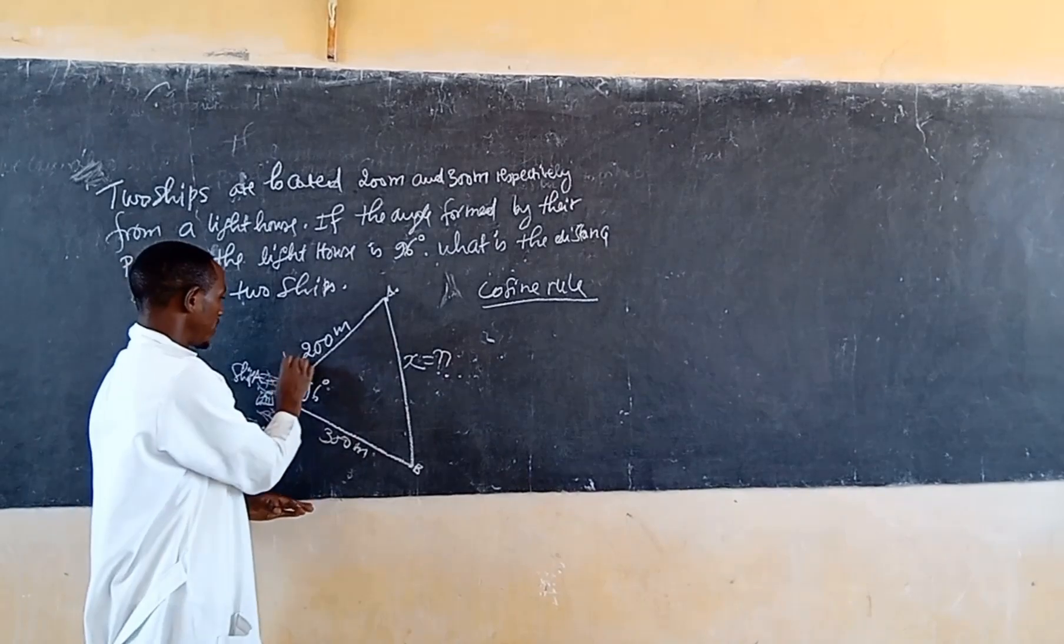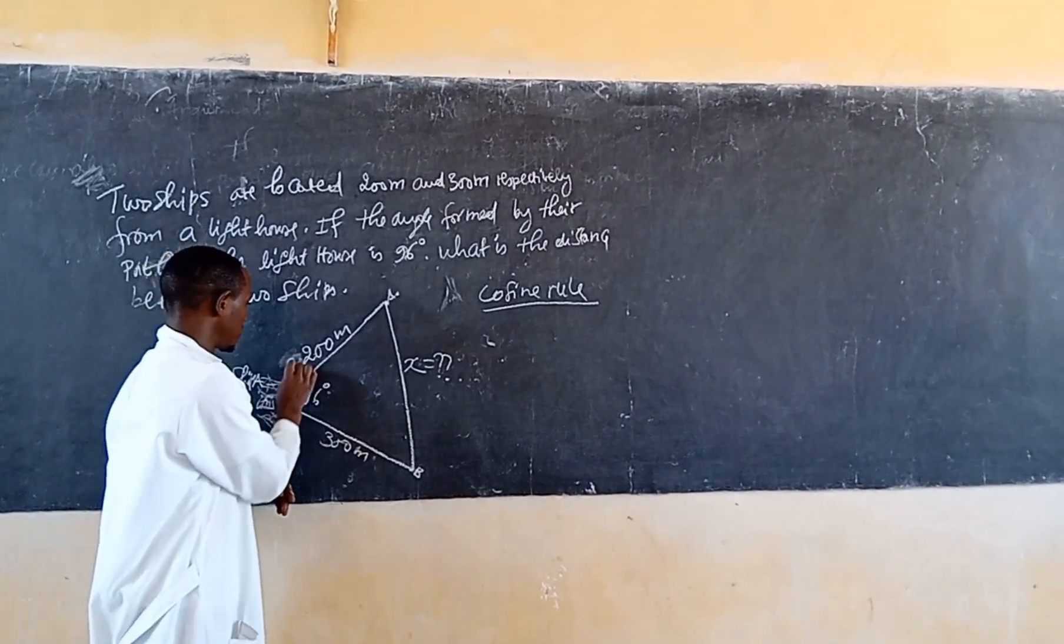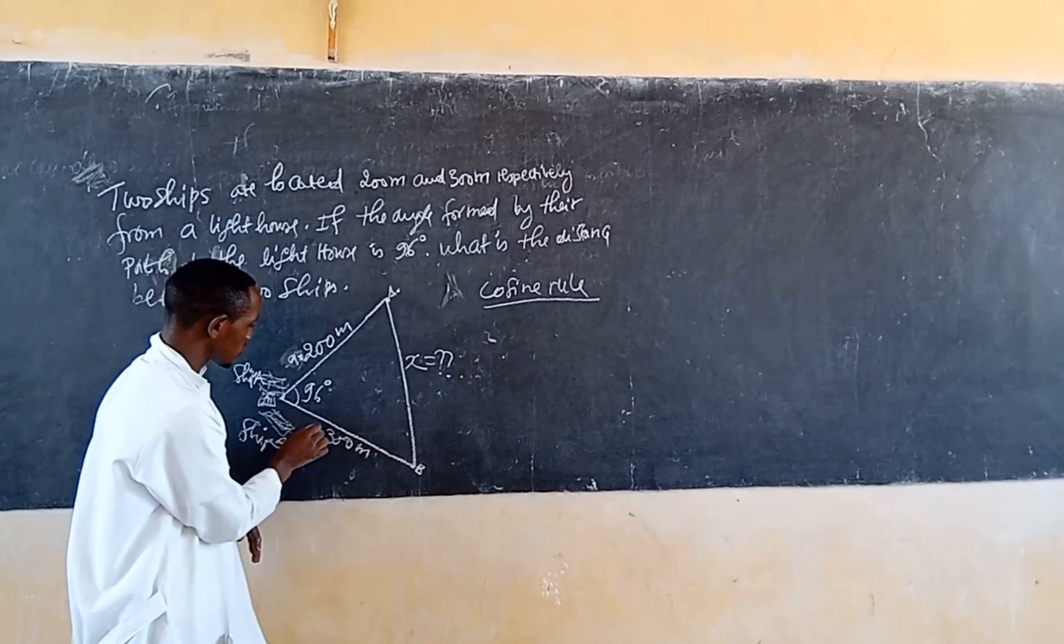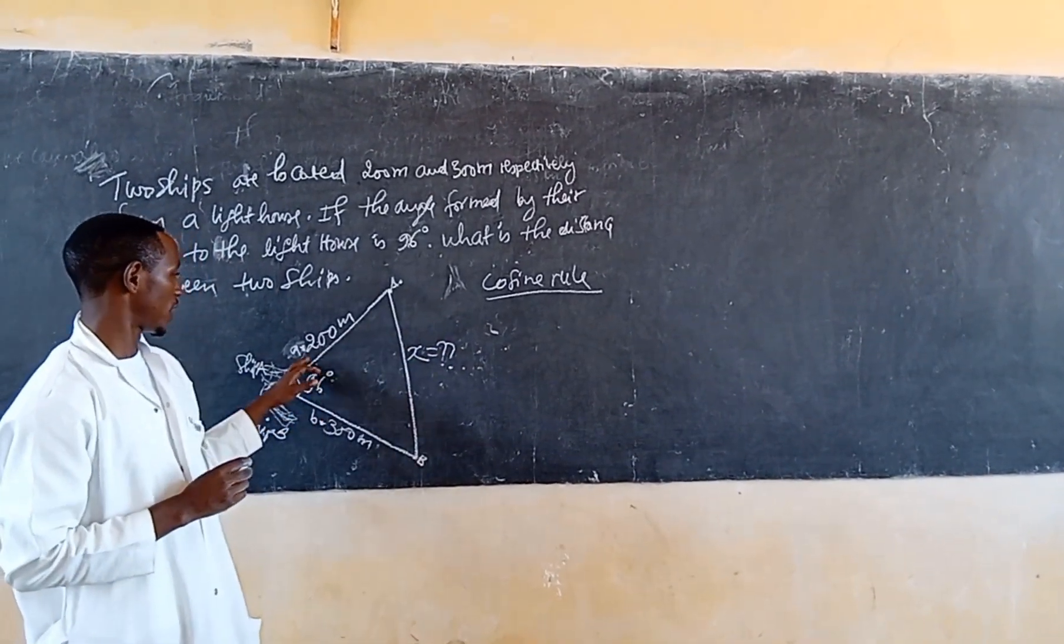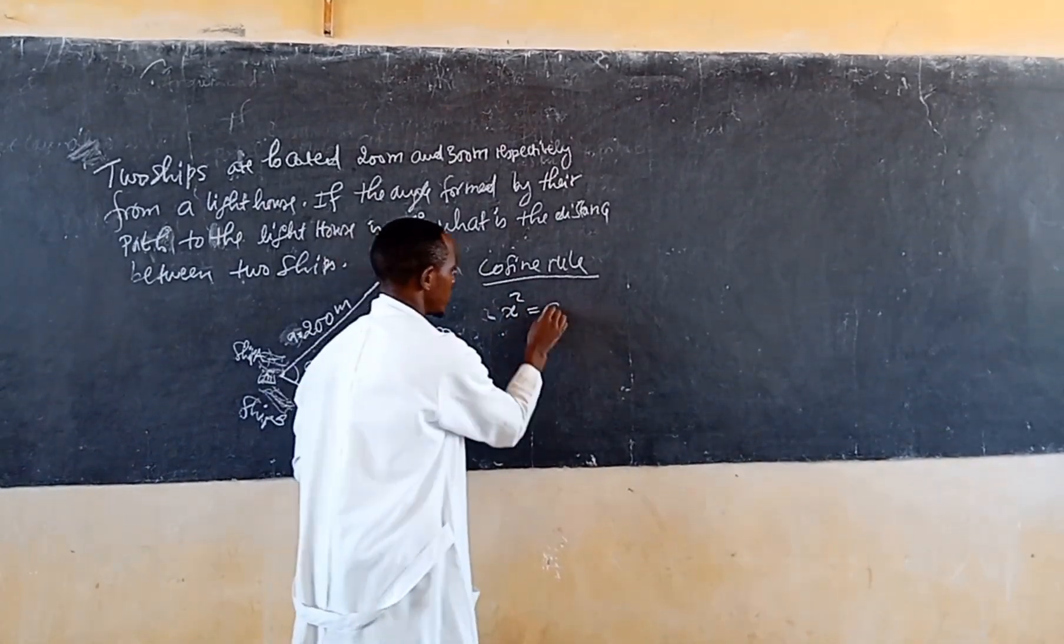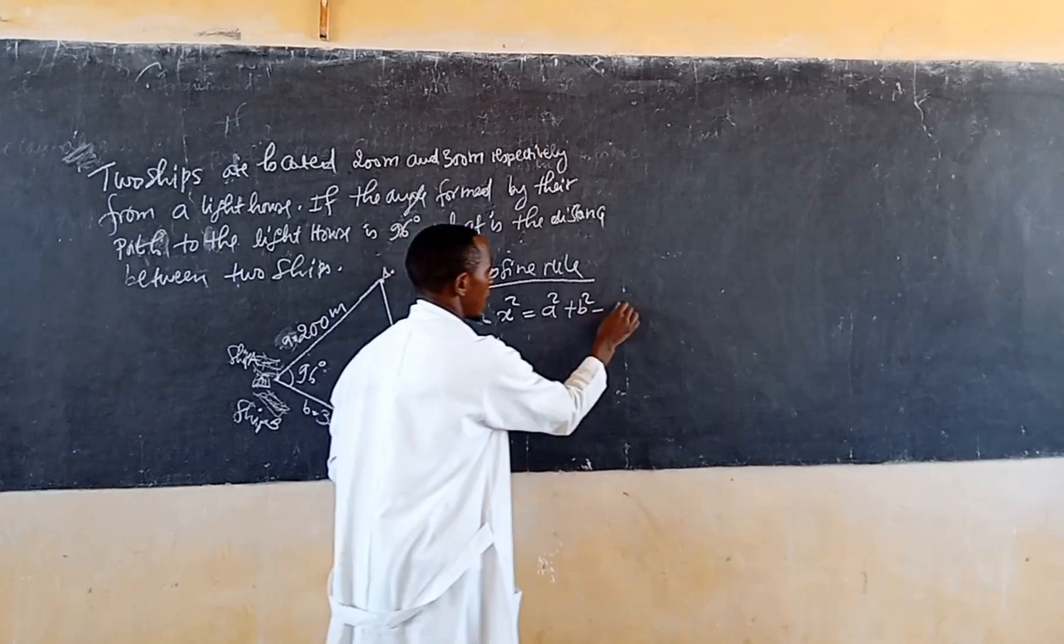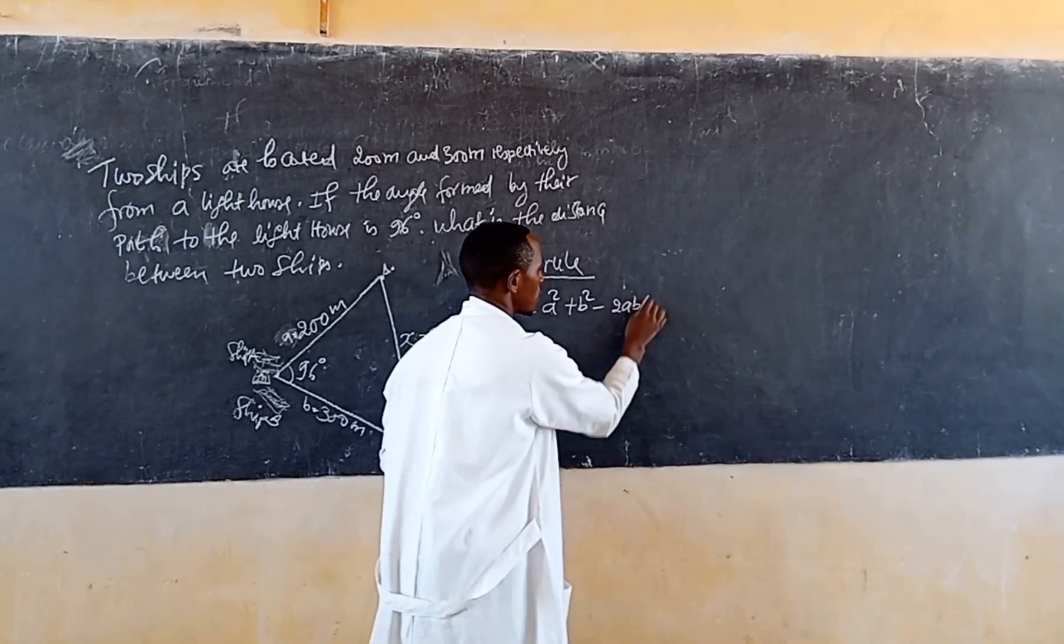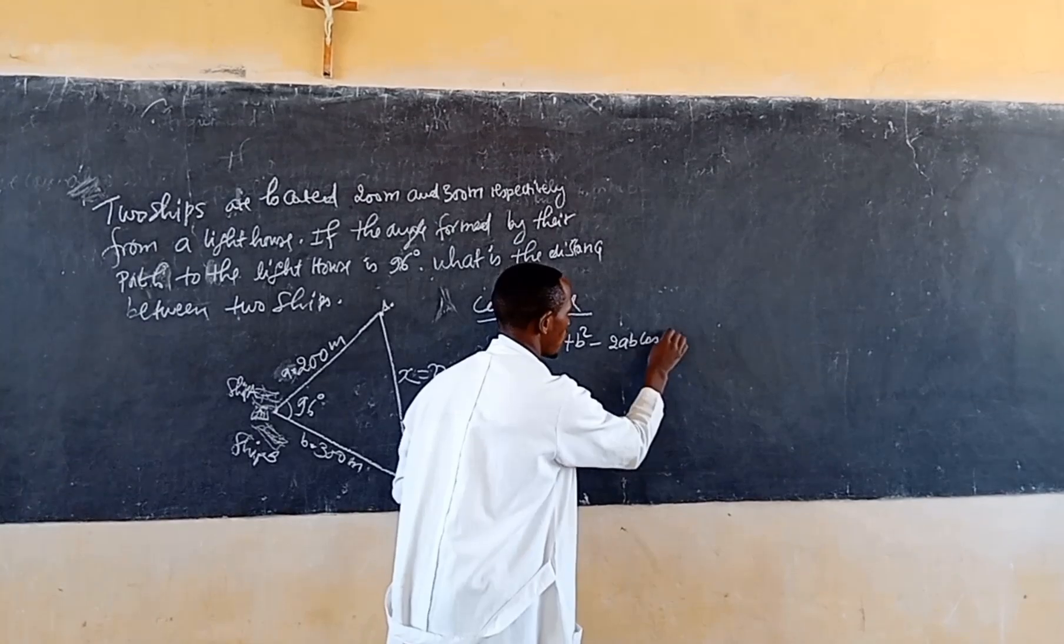this is equal to A, the distance of A, this distance of B is equal to B. So the cosine rule states that x squared is equal to A squared plus B squared minus 2AB cosine of the separated angle.